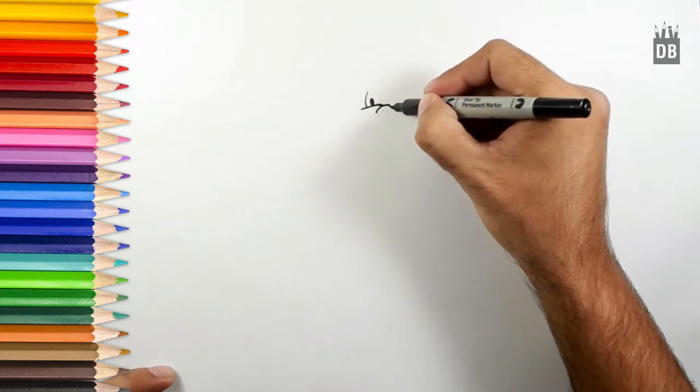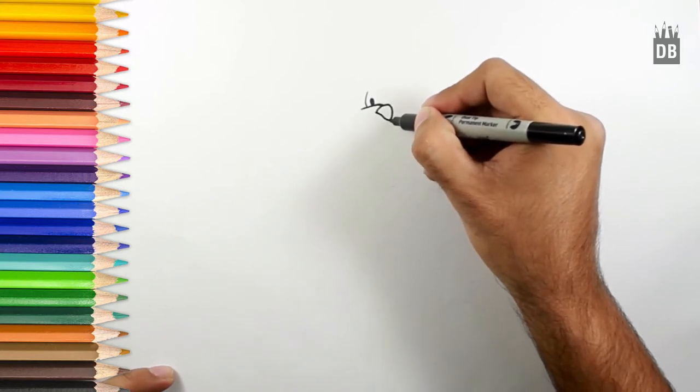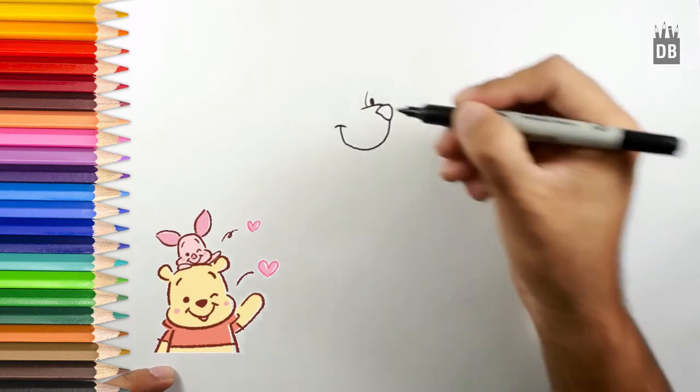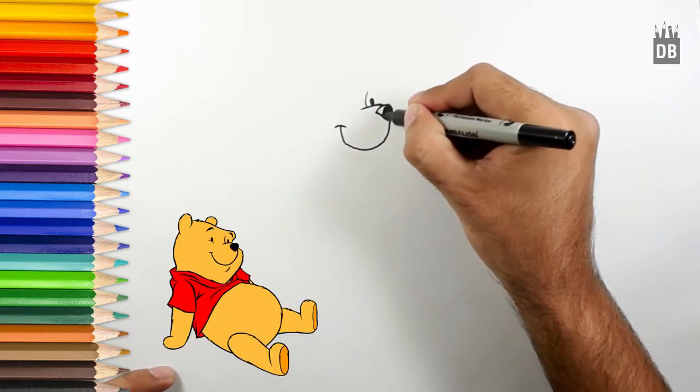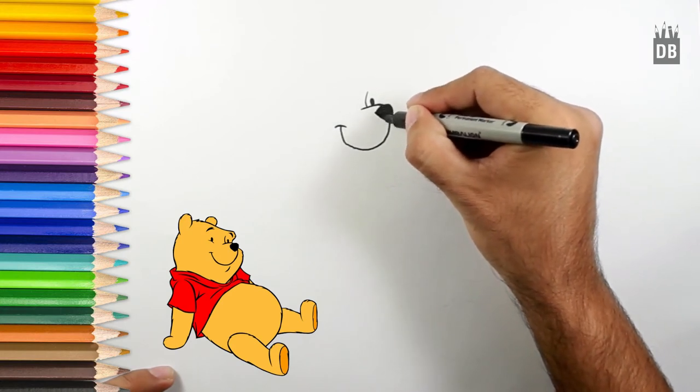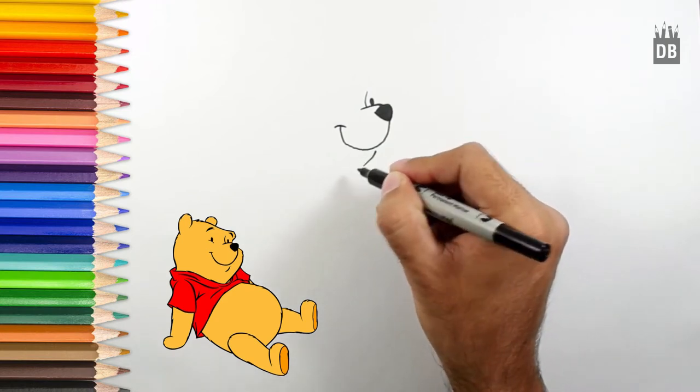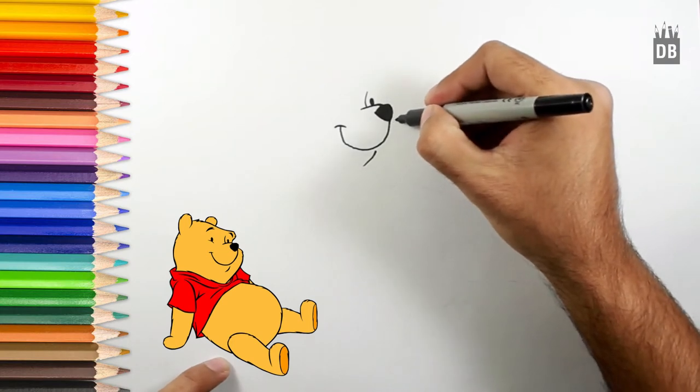The nose is in a triangle shape, and from the tip we will draw a smiley line like this to make it clear. And this is his chin line, because he is a fat bear. From the line here, we will make a chin.